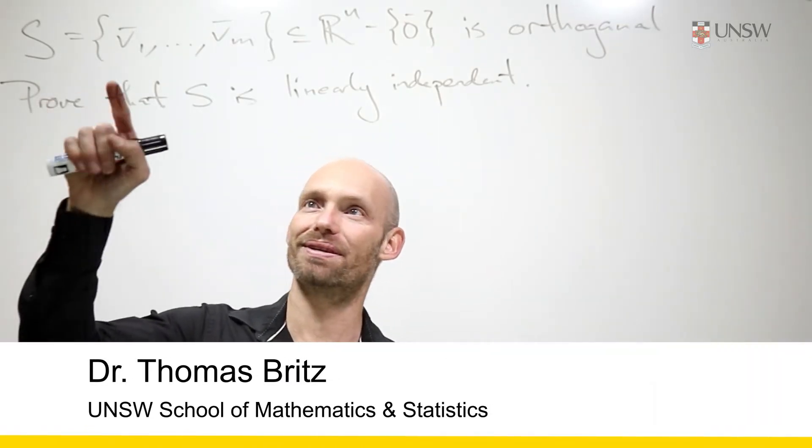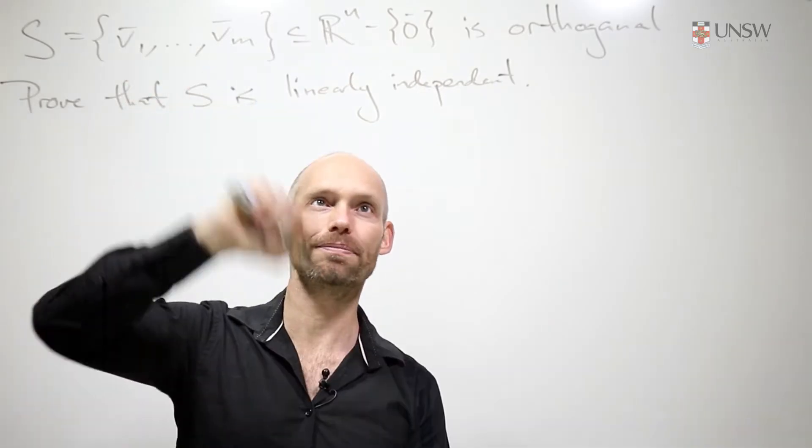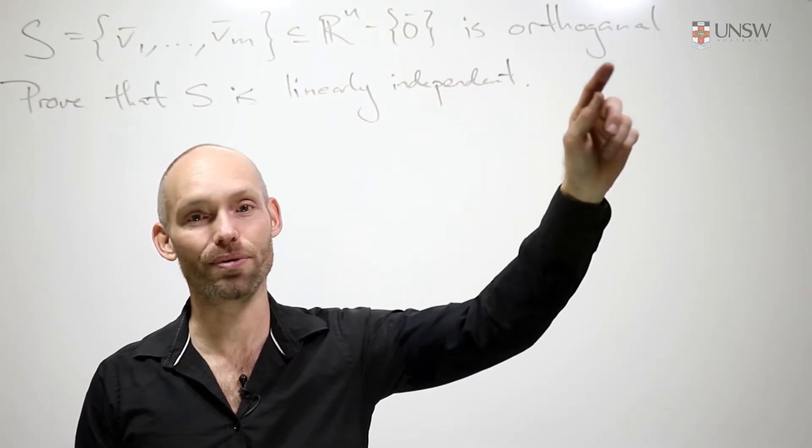Hi, so here we've got some real vectors in R^n, and we've got m of them, none of which are the zero vector, and we're told that this set is orthogonal.